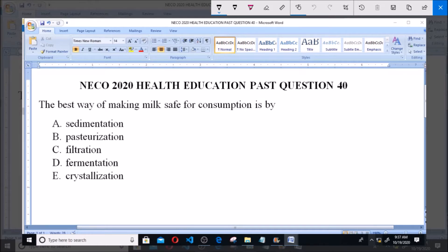Now, milk, like we know, is very important to the body because it's a very rich source of protein and it's gotten from animals. Now, due to the nature of milk, it is possible that milk contains a lot of pathogens.